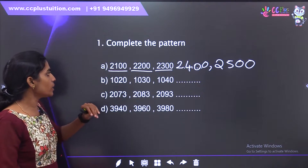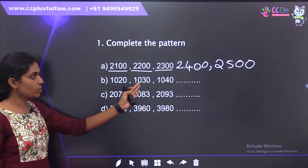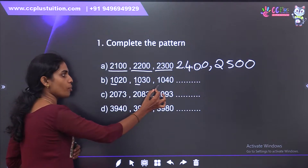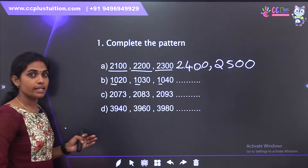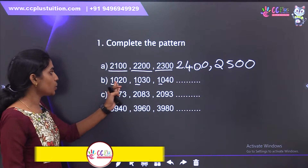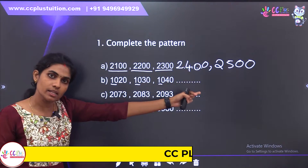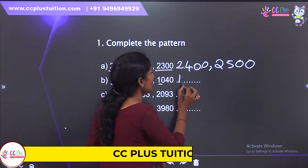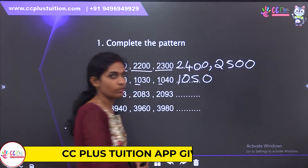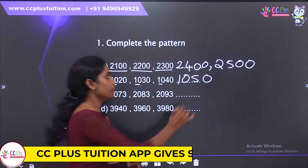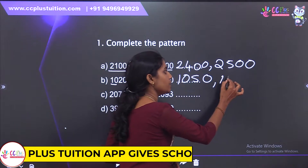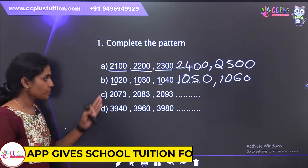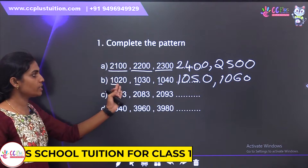Next number is 1020, 1030. Now we have to see this common difference. Next number is 20, 30, 40. What number is 50? That number is 1050. What number is 1060? That number is 50. First number is 60.